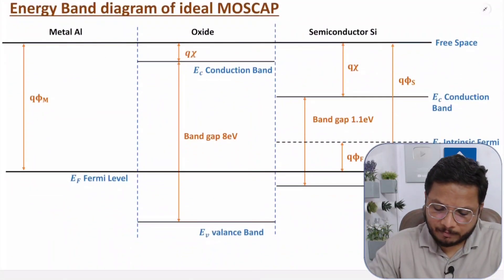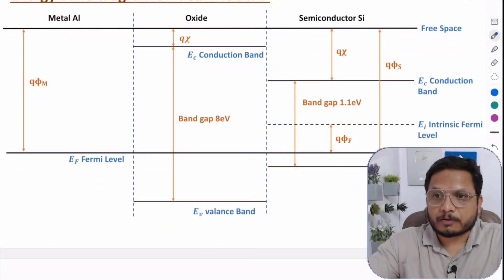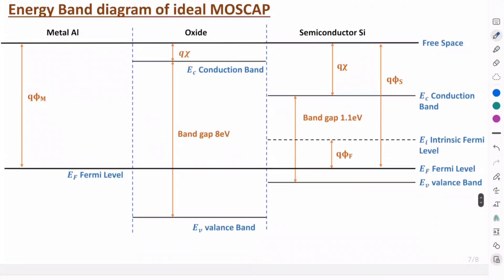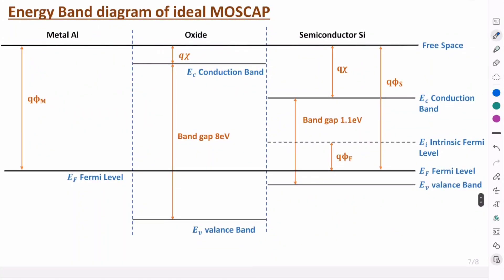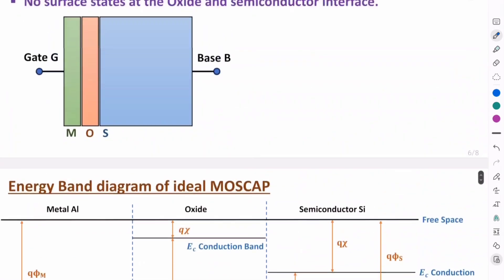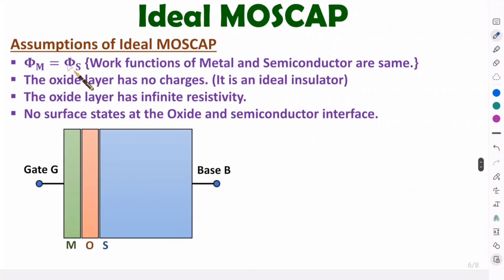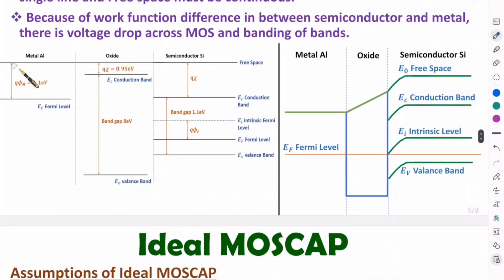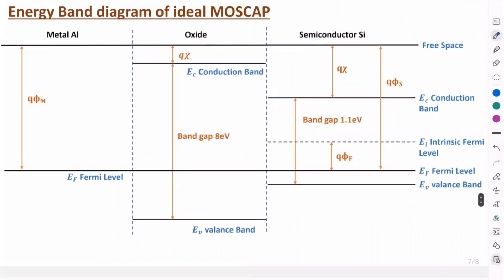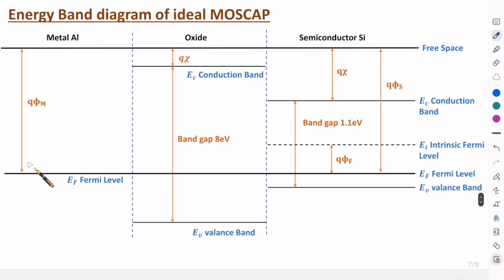Here, if you observe, we have the energy band diagram of ideal MOS cap, with metal on the left, oxide in the middle, and semiconductor on the right. The first assumption states that metal and semiconductor have equal work function. Practically, we have lower work function for metal and higher for semiconductor — but in the ideal case, both are equal. Here we have the metal work function and here we have the semiconductor work function, and both are equal.